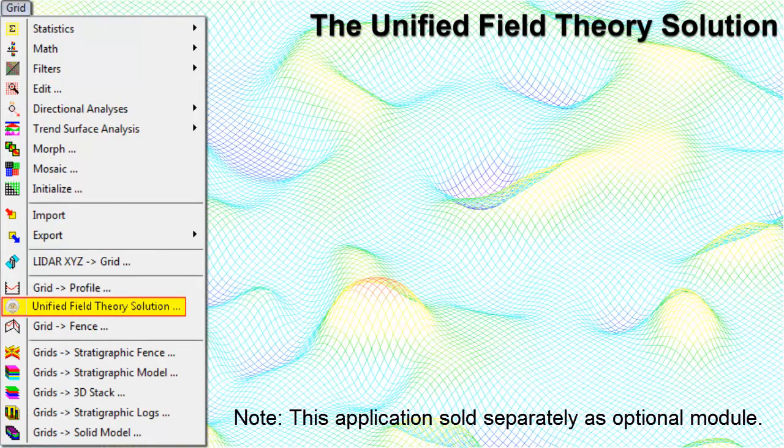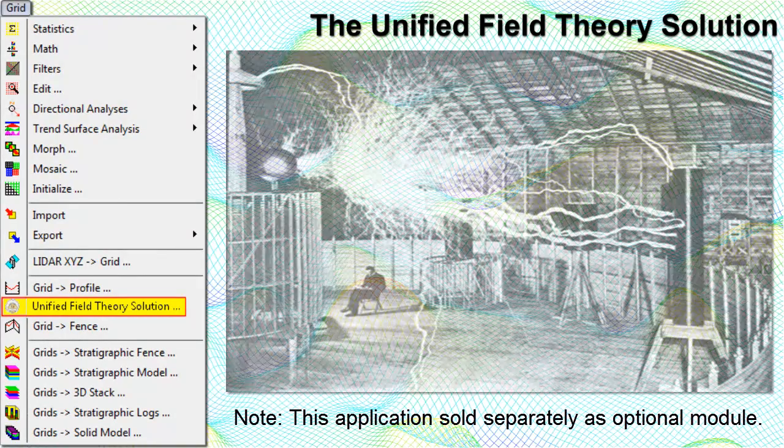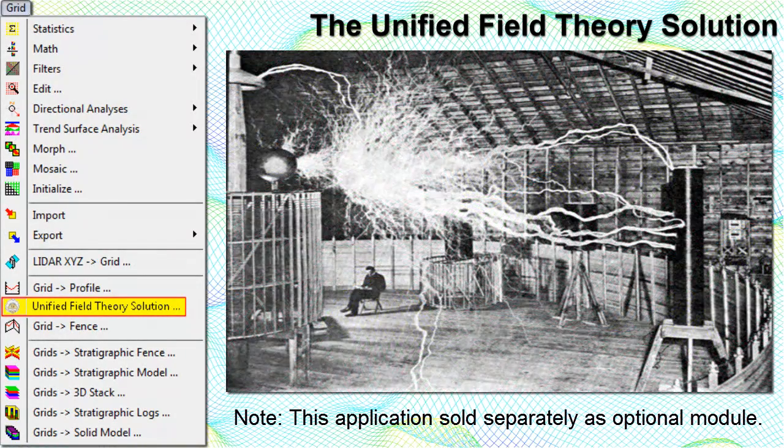The Unified Field Theory solution combines the fundamental forces of physics and elementary particles into a single field. Specifically, this program unifies the general theory of relativity with electromagnetism, thereby providing a simple explanation for quantum mechanics.